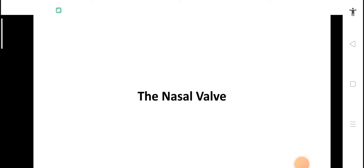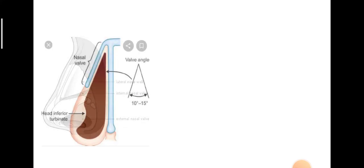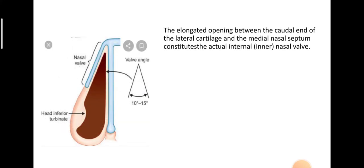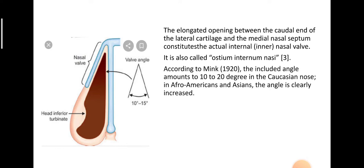Let us study the nasal valve. The nasal valve comprises of the internal nasal valve and the external nasal valve. The elongated opening between the caudal end of the upper lateral cartilage and the medial nasal septum constitutes the internal nasal valve. This angle constitutes the internal nasal valve and it is also called ostium internum nasae.